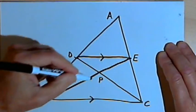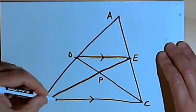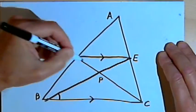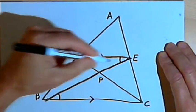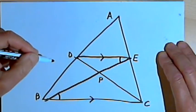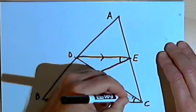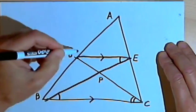So I know that angle PBC is congruent with angle PED. They're alternate interior angles. In the same way I know that angle PCB is congruent to angle PDE.